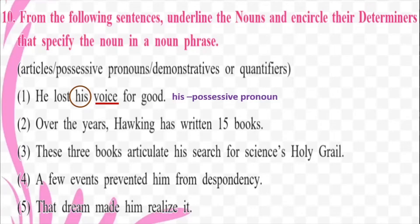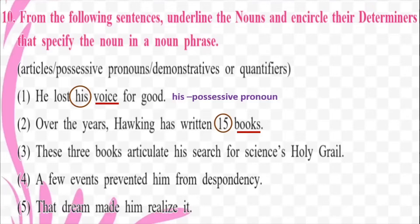Sentence number two: 'Over the years, Hawking has written 15 books.' There are a number of nouns here — 'Hawking' is also a noun, but we want to identify the noun which has got a determiner preceding it. That noun is 'books'. Which is the determiner? It is '15'. And '15' shows you the number of books he has written — it shows you the quantity. So '15' here is a quantifier, and 'books' is the noun.